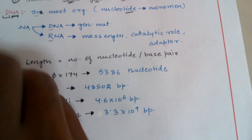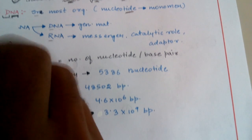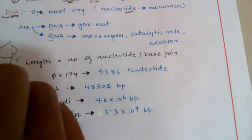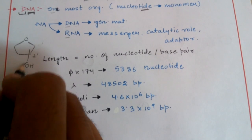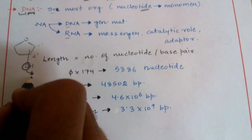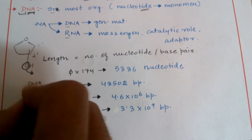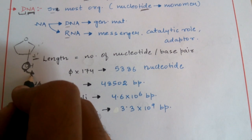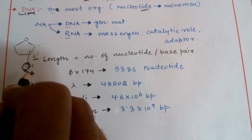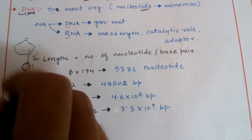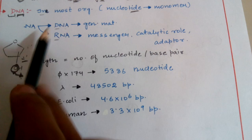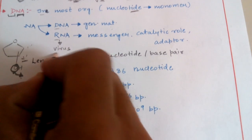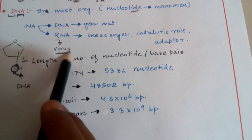In ribonucleic acid, the sugar is ribose, and at the 2-prime position there is an OH group. This oxygen is lacking in deoxyribose — as the name 'deoxy' indicates, it means the elimination of oxygen. In DNA, the sugar does not have oxygen at the 2-prime position, and that oxygen is responsible for reactivity. Since the reactivity center is eliminated, DNA is less reactive and therefore much more stable, while RNA is much more reactive.